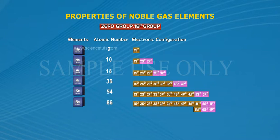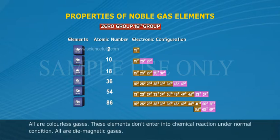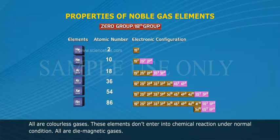Properties of noble gas elements: All are colorless gases. These elements don't enter into chemical reactions under normal conditions. All are diamagnetic gases.